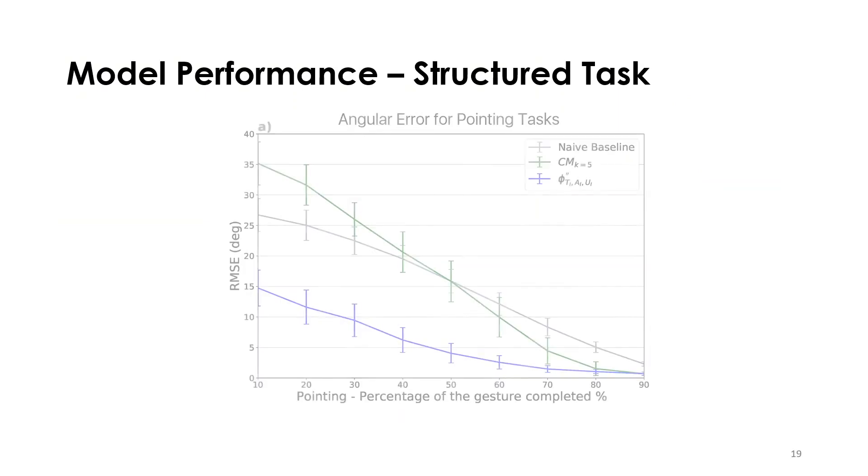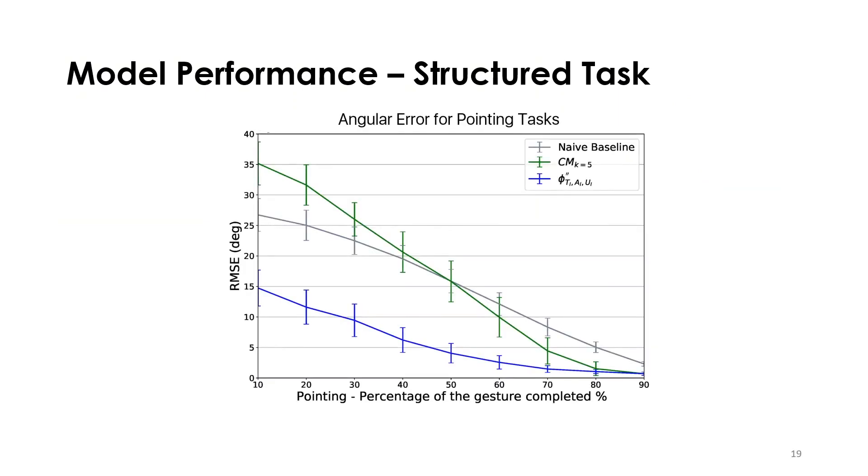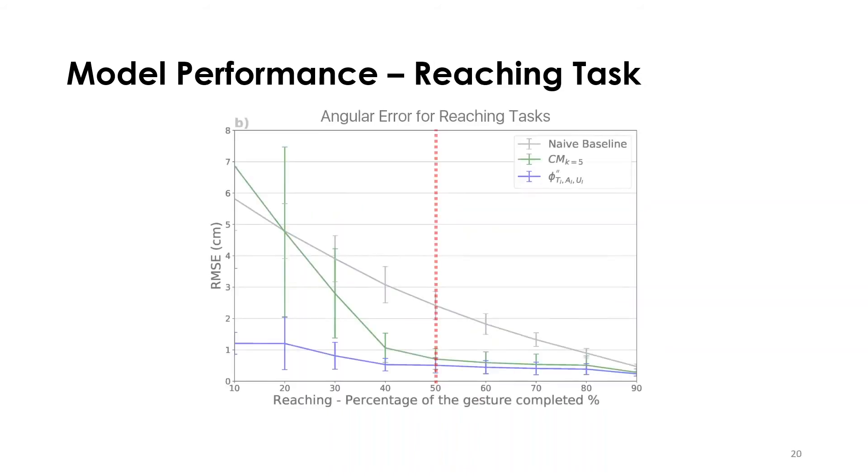We further tested our model for pointing tasks only, which showed us that our model had an angular error of 4 degrees from the landing portion for 50% of the way through the movement. Similarly, for reaching tasks, it achieved an error of 0.41 centimeters from the landing portion for 50% of the way.